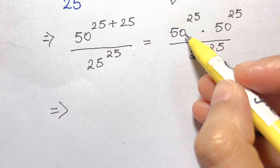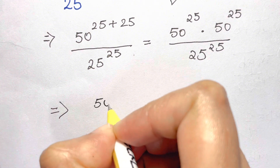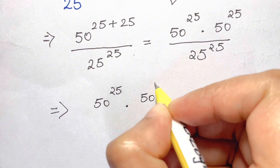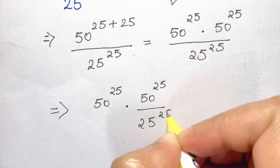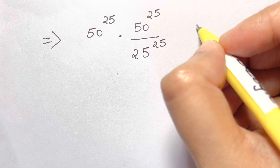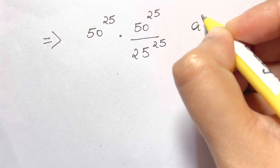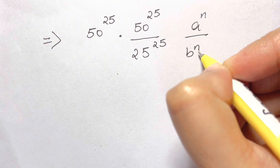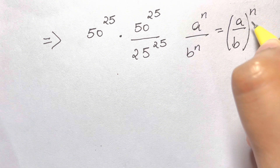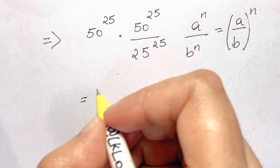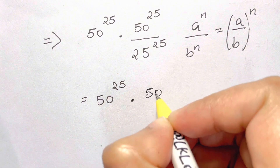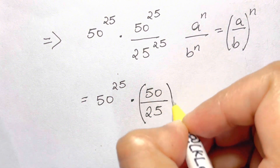We have 50^25, and we club the two terms 50^25 over 25^25 together. We apply the law: a^n / b^n = (a/b)^n. So we get 50^25 times (50/25)^25.